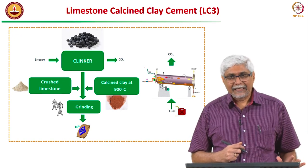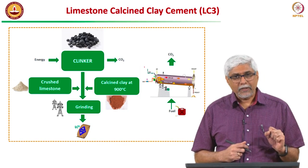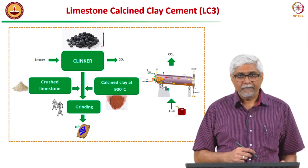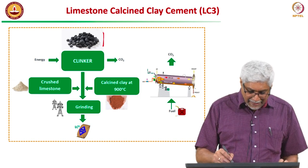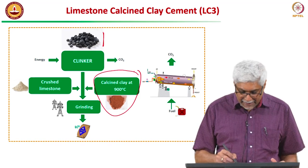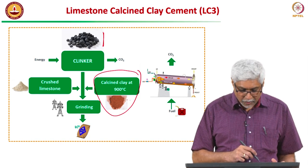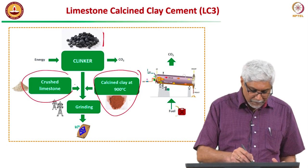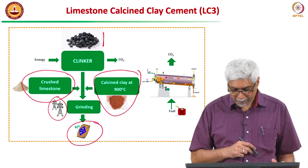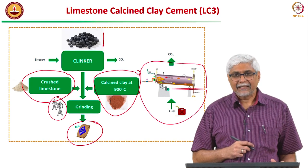To make LC3 we need clinker as usual — about 50% clinker that will be ground as in OPC. We have kaolinitic clay that has to be calcined to 900 degrees Celsius, requiring some energy. There will also be some CO2 emission. We need crushed limestone and energy to crush it, and finally grind everything to give us the LC3 product. Some sort of kiln or calciner would be needed for this.